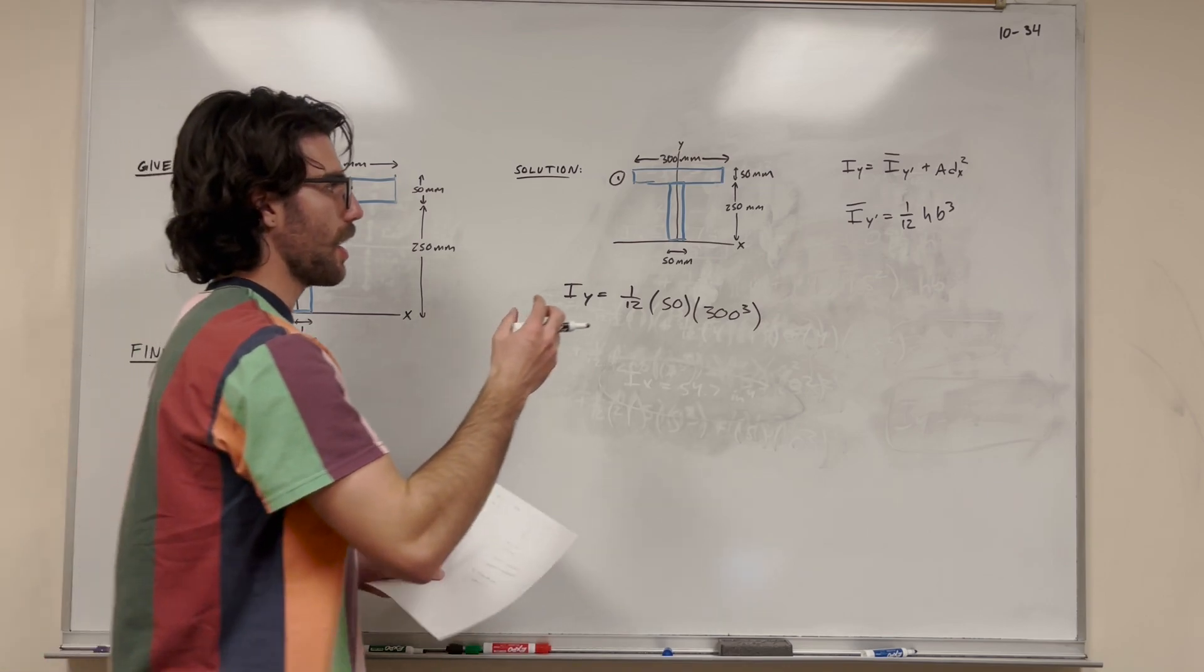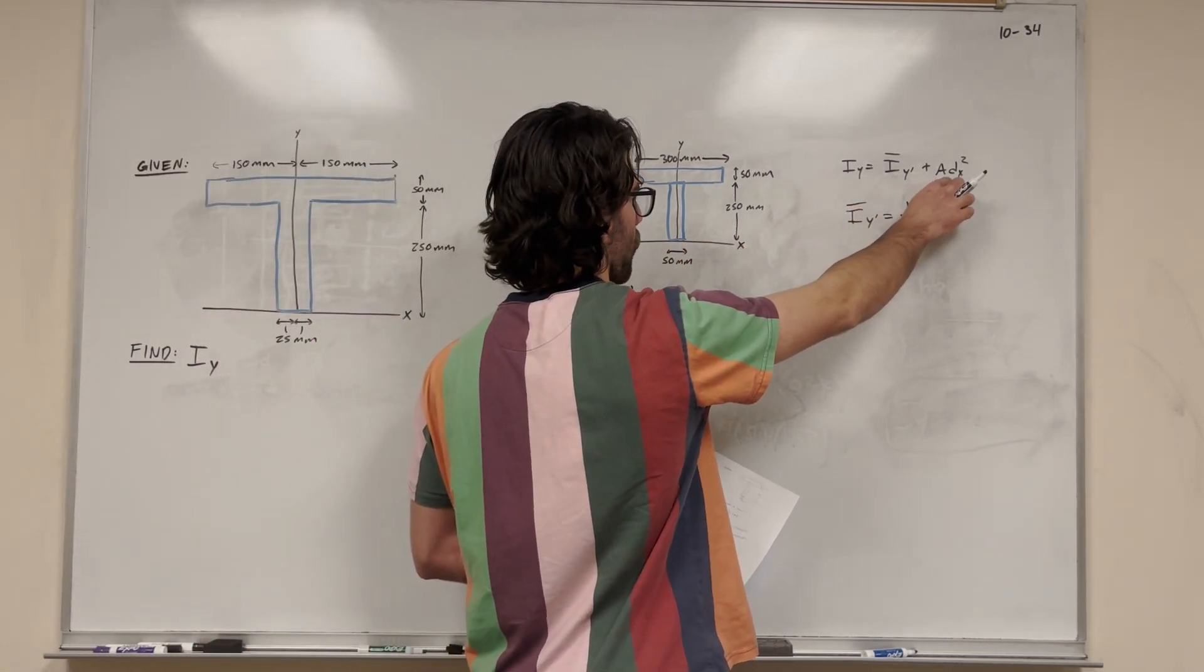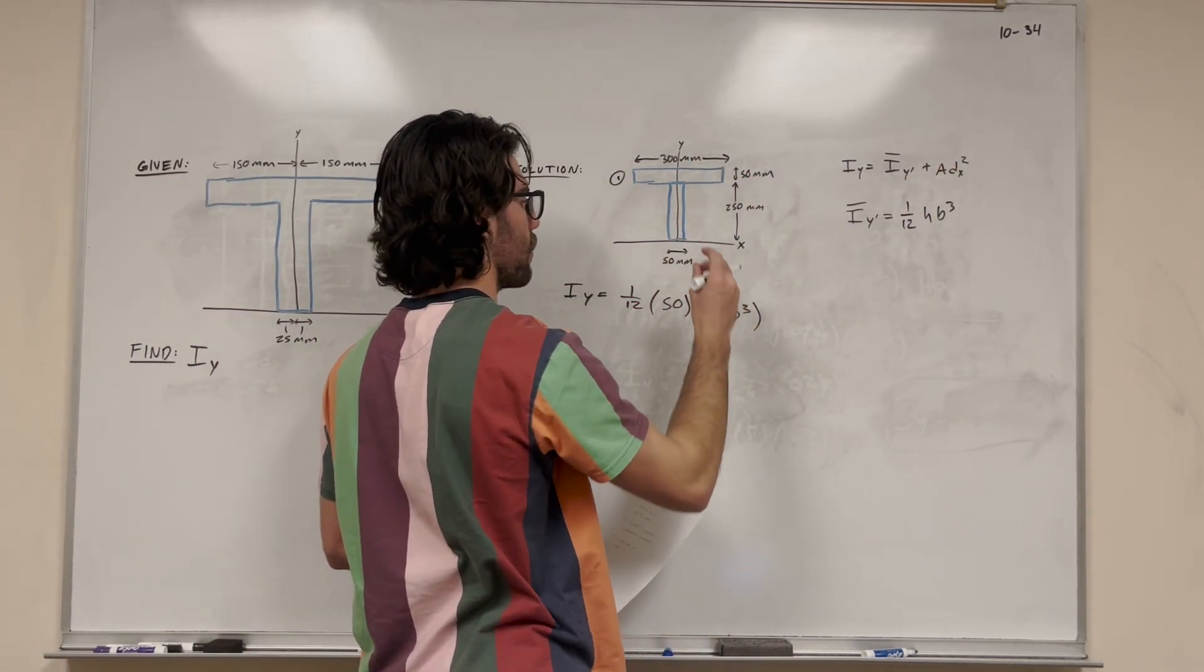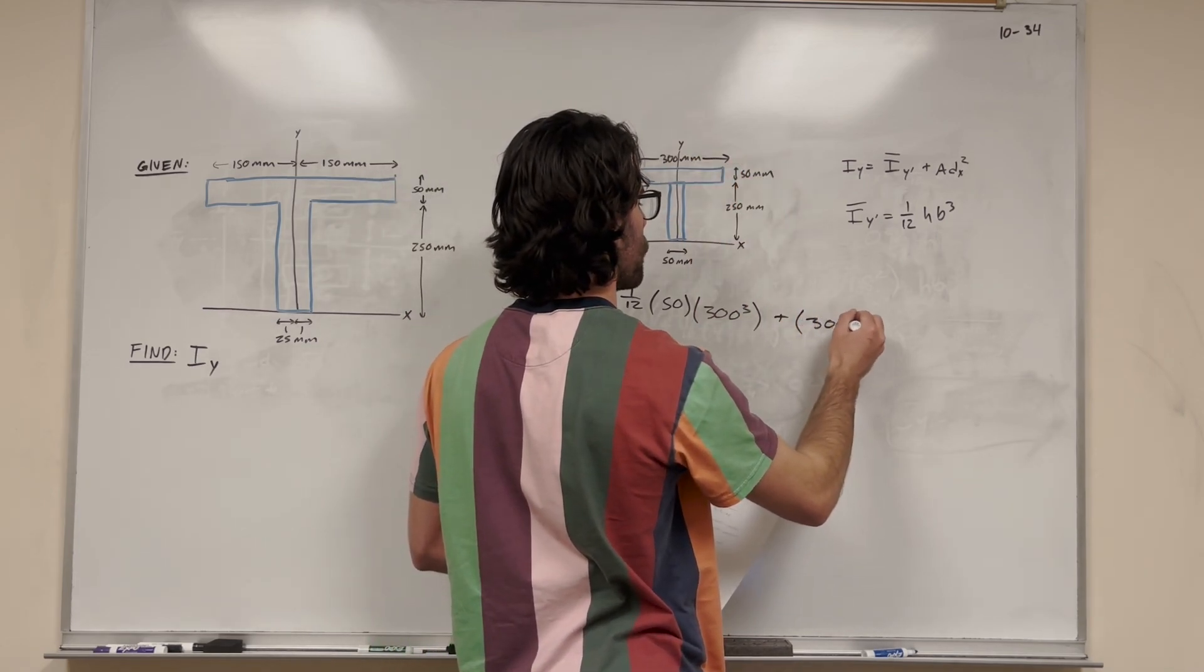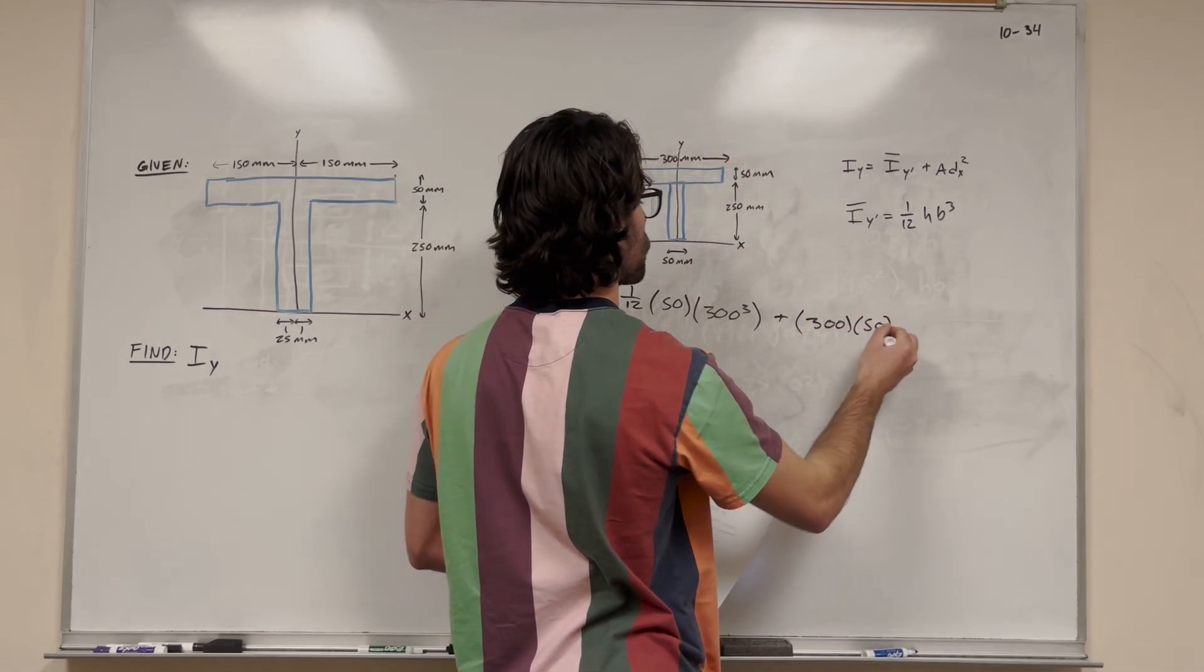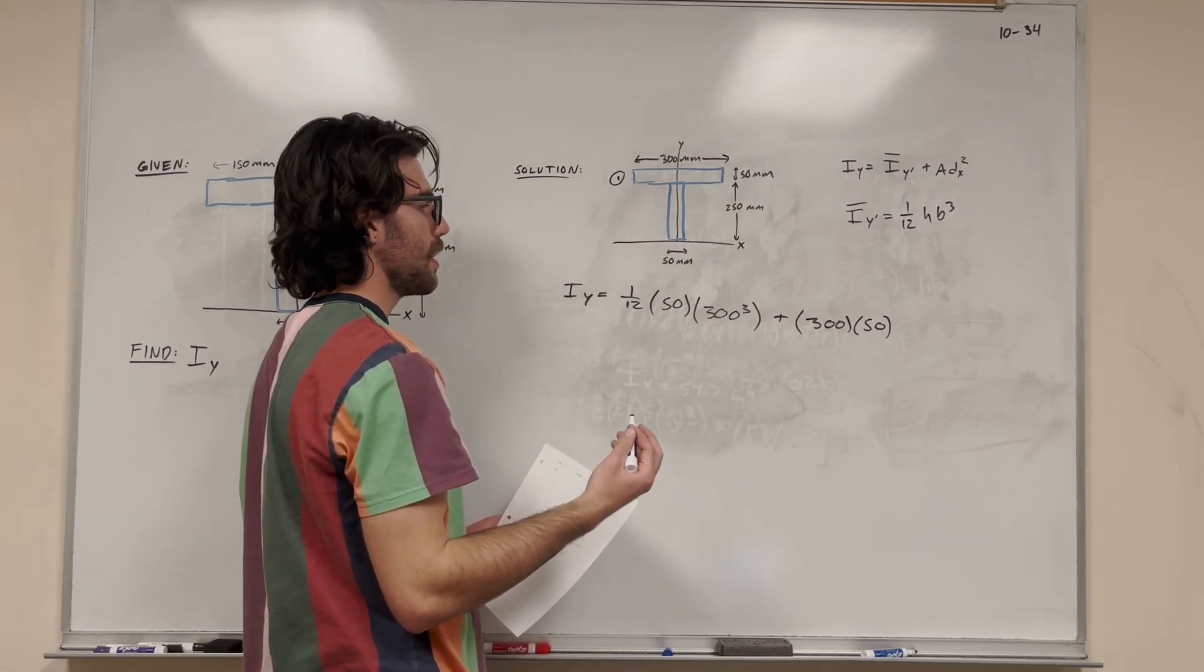Now that we've done the I bar y prime, you still need to add it to area times distance x for this top rectangle. So we're going to add it to its area. The area of this rectangle is 300 millimeters times 50 millimeters, just base times height. Then distance x.